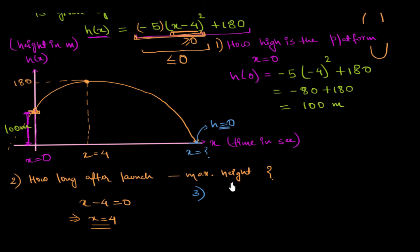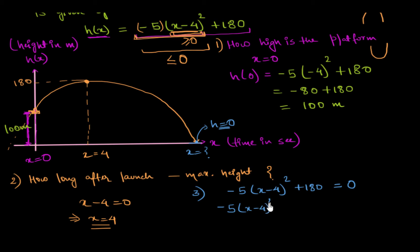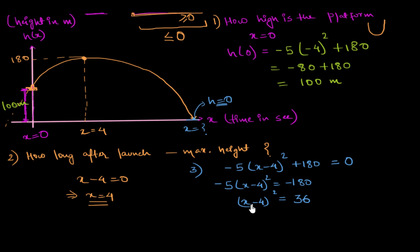We set negative 5 times x minus 4 whole square plus 180 equal to 0, because the height equals 0. Moving 180 to the other side: negative 5 times x minus 4 whole square equals negative 180. Dividing both sides by negative 5: x minus 4 whole square equals 36. Taking the square root, x minus 4 equals positive 6 or negative 6.